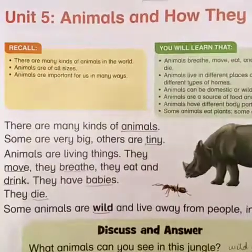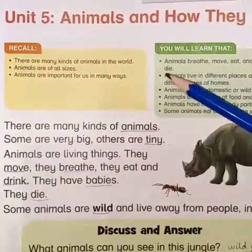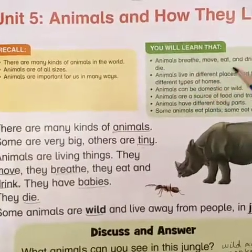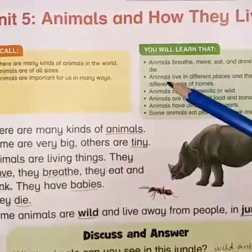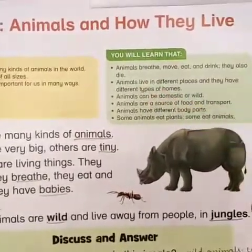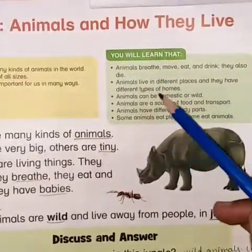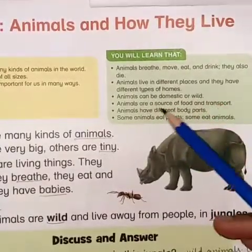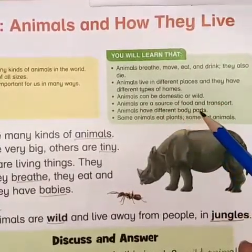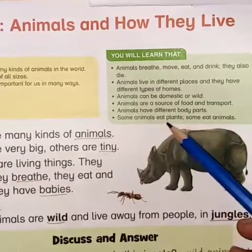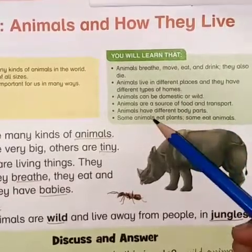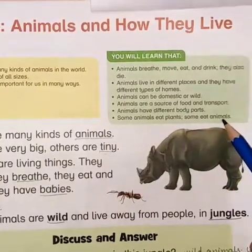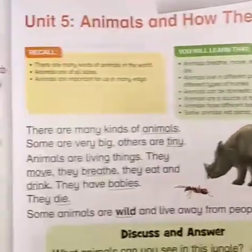Animals and how they live. In this unit you will learn that animals breathe, move, eat and drink. They also die. Animals live in different places and they have different types of homes. Animals can be domestic or wild. Animals are a source of food and transport. Animals have different body parts. Some animals eat plants, some eat other animals.